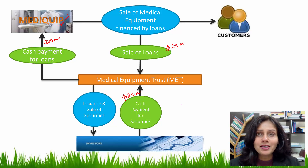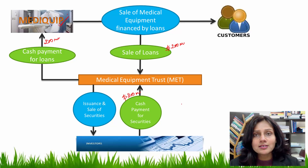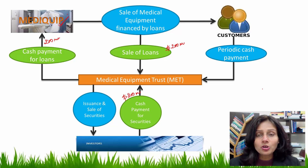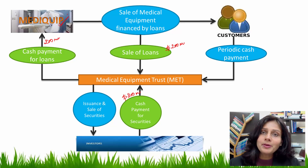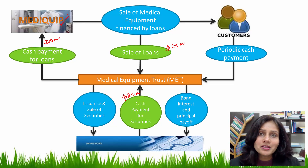From where will Medical Equipment Trust make these payments of interest and principal? The $200 million it received from investors has already been paid to MediCube. Well, let's not forget the customers who still have to make monthly installment payments against their loans. Medical Equipment Trust will be servicing these loans and directly collecting the installments from the customers. It will use this money collected as installments to make timely interest payments to its investors. This is what completes the picture — I hope the process of securitization is crystal clear to you now.